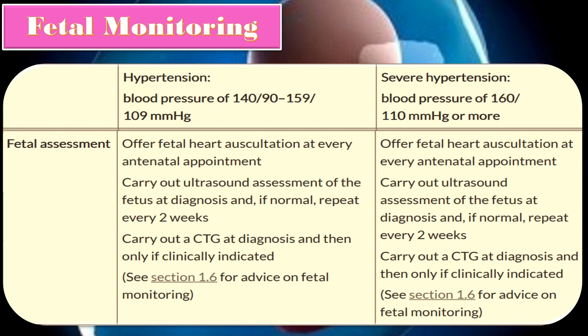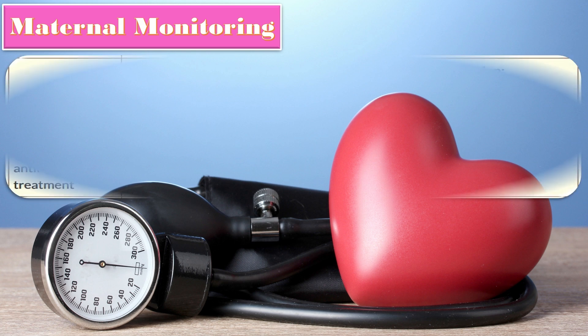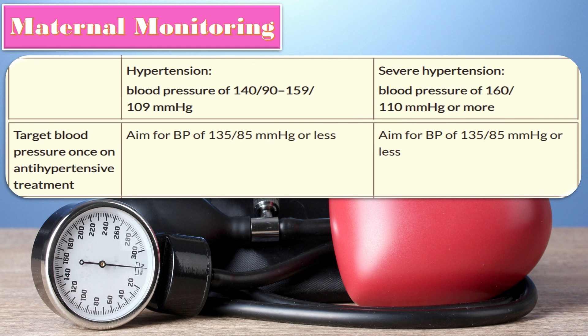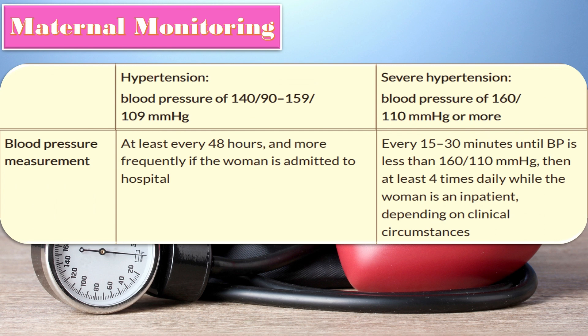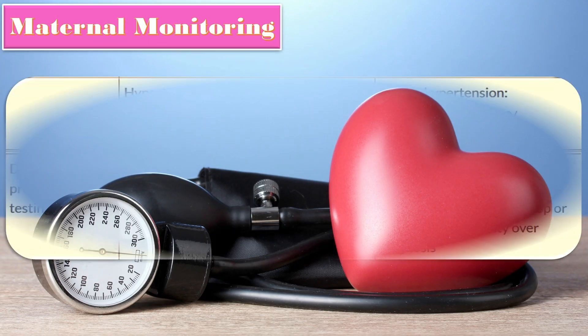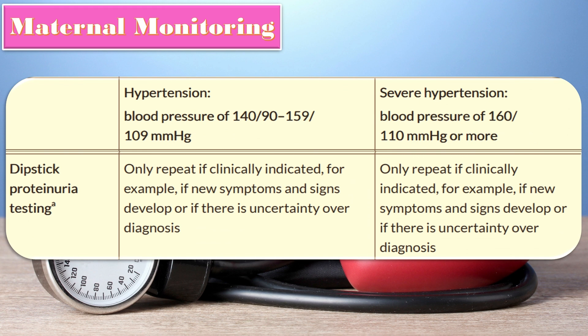For maternal monitoring, aim for a blood pressure of 135/85 or less in both hypertension and severe hypertension. In hypertension, measure blood pressure at least every 48 hours, and more frequently if admitted. In severe hypertension, check blood pressure every 15 to 30 minutes until below 160/110, then at least four times daily while inpatient. For hypertension, perform dipstick proteinuria and repeat only if clinically indicated, such as when new symptoms or signs develop.